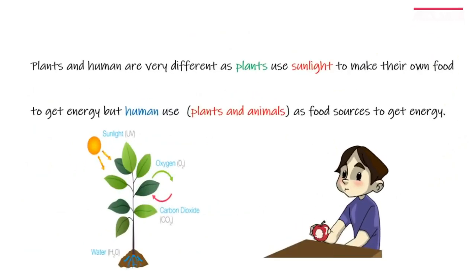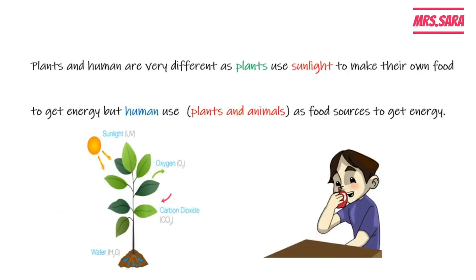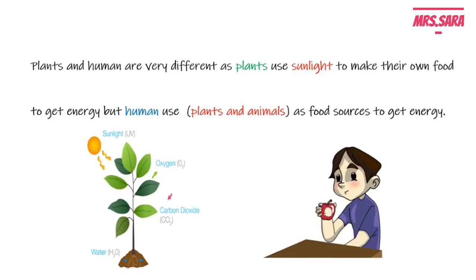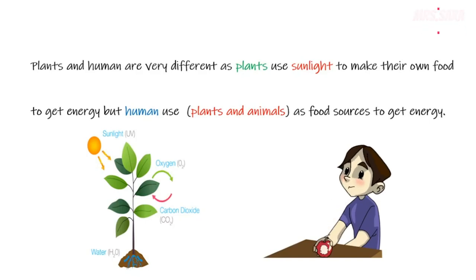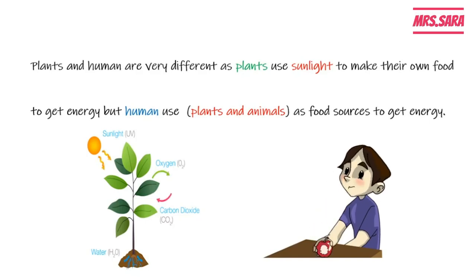Remember that plants and humans are very different: plants use sunlight to make their food to get energy, but humans use plants and animals as food sources to get energy.